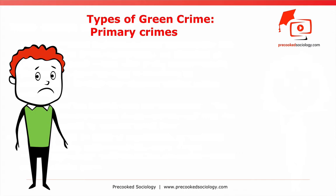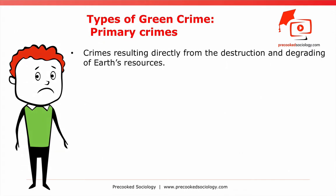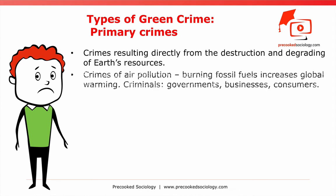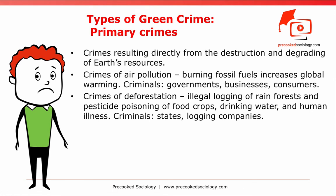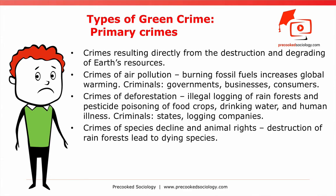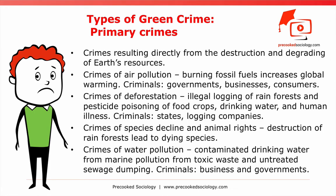Primary green crimes are crimes resulting directly from the destruction and degrading of Earth's resources. Crimes of air pollution include burning fossil fuels, which increases global warming — criminals are governments, businesses, and consumers. Crimes of deforestation include illegal logging of rainforests and pesticide poisoning of food crops, drinking water, and human illness — criminals are states, logging companies, and cattle ranchers. Crimes of species decline and animal rights include destruction of rainforests leading to dying species, trafficking animals and animal parts, as well as dog fighting and badger baiting. Crimes of water pollution include contaminated drinking water from marine pollution, toxic waste, and untreated sewage dumping — criminals are businesses and governments.